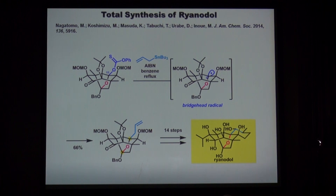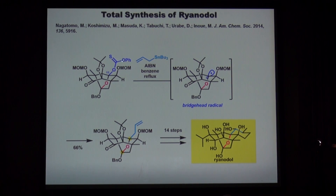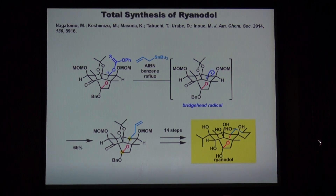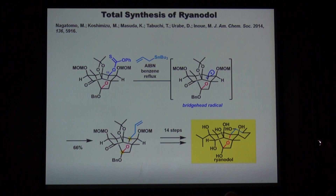In fact, we used this bridgehead radical reaction to make an extremely hindered bond in the Uriano-Doll structure. Starting from this compound equipped with a thiocarbonate, under these conditions this C-O bond is cleaved, the bridgehead radical forms, and this radical cyclizes to form this compound. Fourteen steps from this compound gave rise to the Uriano-Doll structure. Because this is a very useful method to make hindered bonds, we decided to expand the scope of this reaction and also develop a more convergent version.